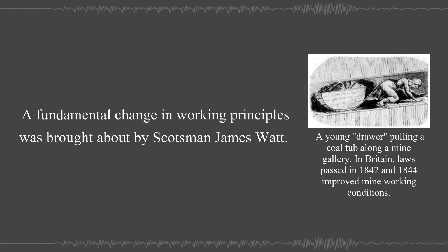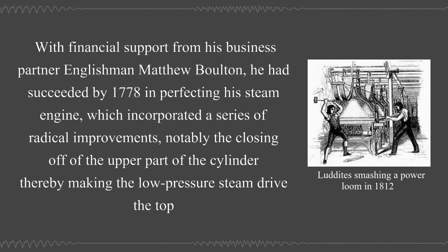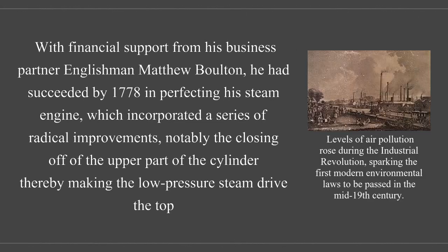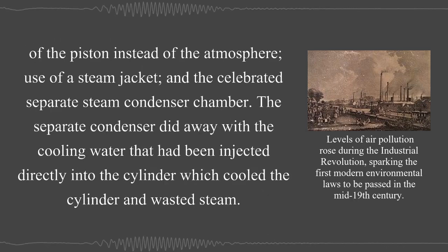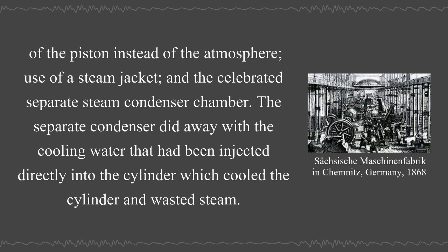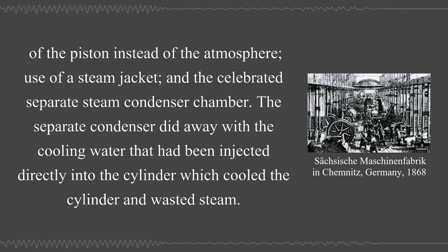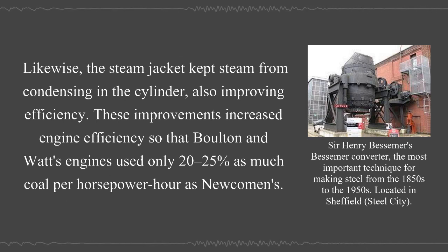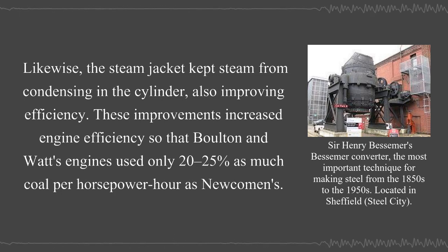A fundamental change in working principles was brought about by Scotsman James Watt. With financial support from his business partner Englishman Matthew Bolton, he had succeeded by 1778 in perfecting his steam engine, which incorporated a series of radical improvements, notably the closing off of the upper part of the cylinder, thereby making the low-pressure steam drive the top of the piston instead of the atmosphere, use of a steam jacket, and the celebrated separate steam condenser chamber. The separate condenser did away with the cooling water that had been injected directly into the cylinder, which cooled the cylinder and wasted steam. These improvements increased engine efficiency so that Bolton and Watt's engines used only 20–25% as much coal per horsepower as Newcomen's.